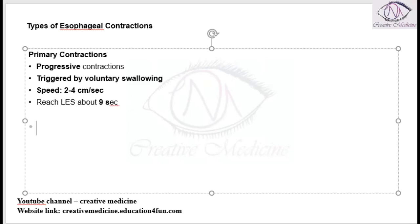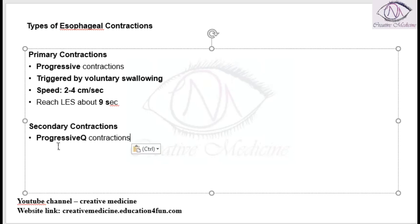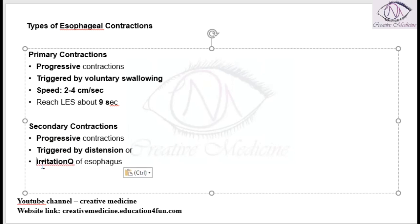The next type are called secondary contractions. These are also progressive contractions which flow forward, and these secondary contractions are mainly triggered by the distension and irritation of the esophagus.